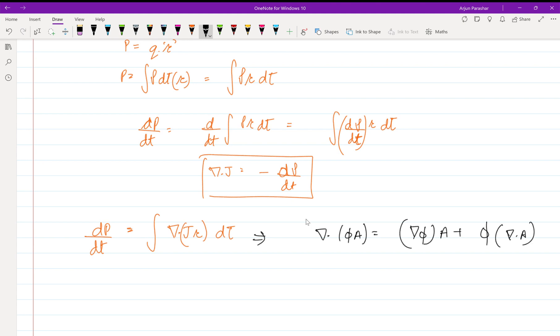So we get del dot j r d tau integration is equal to integration del j dot r d tau plus integration r del dot j d tau. This equals dp by dt.